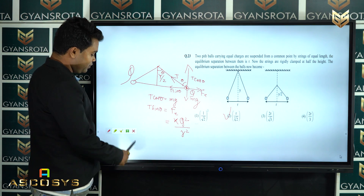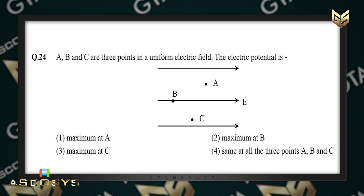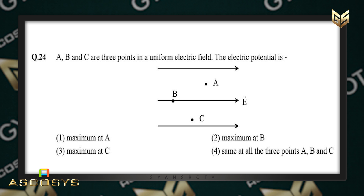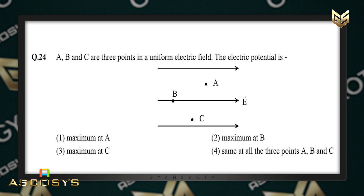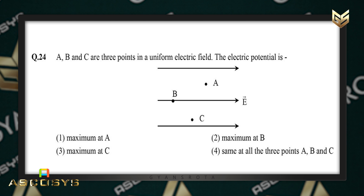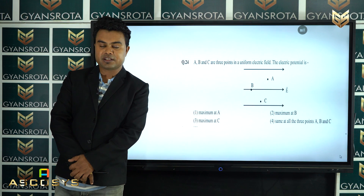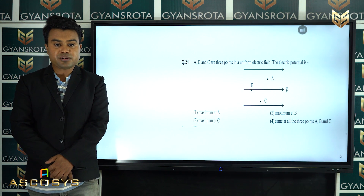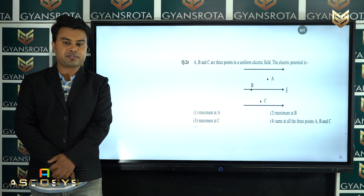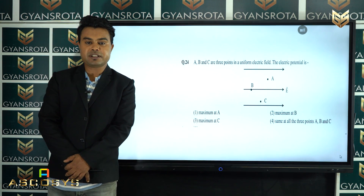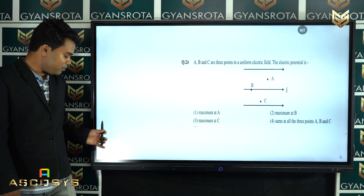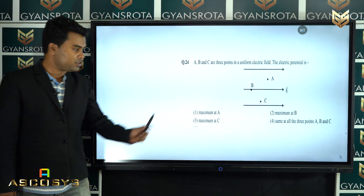Question 24: points A, B, and C are in a uniform electric field. Which point has the maximum electric potential? In a uniform electric field, the point lying on the field line that is farthest in the direction opposite to the field has the highest potential. Point B lies on the field line, so point B has the maximum potential. The right answer is B.